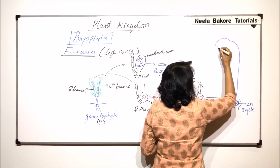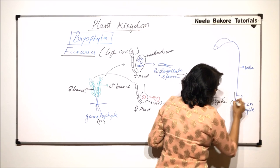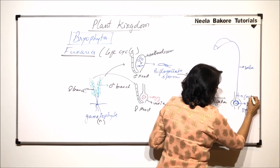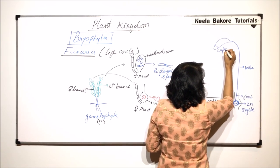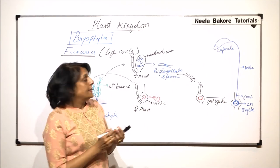And here we had that, this was the seta. This much part which remains embedded is called the foot. And this is the capsule. Now what happens inside the capsule is that.